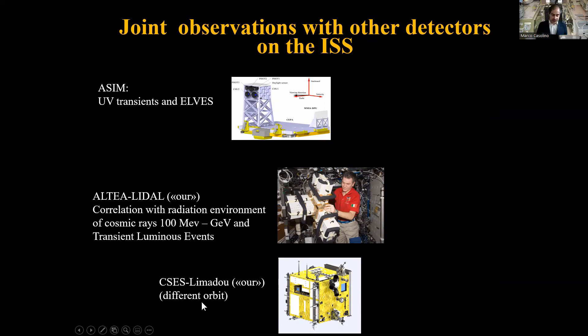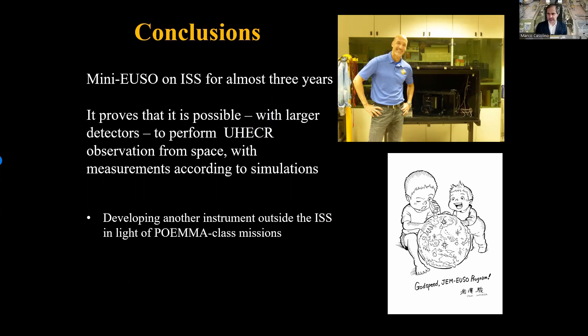In conclusion, Mini-EUSO has been on the ISS taking data for almost three years and has proven that it is possible with larger detectors to perform ultra-energy cosmic ray observations from space, since the background per pixel is the same as we would have with KLYPVE or larger detectors. The current discussion is on developing another instrument for the ISS in light of the larger development on the longer time frame of POEMMA or K-EUSO. Thank you very much for your attention.